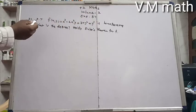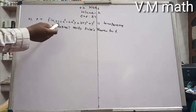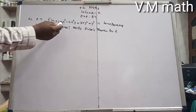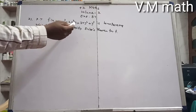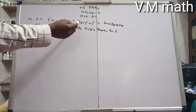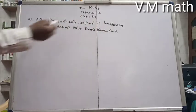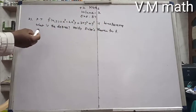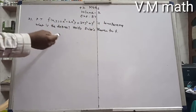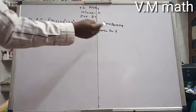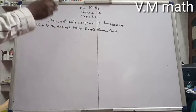Question 8.78: Prove that f(x, y) = x³ - 2x²y + 3xy² + y³ is homogeneous. Find the degree and verify Euler's theorem for f.